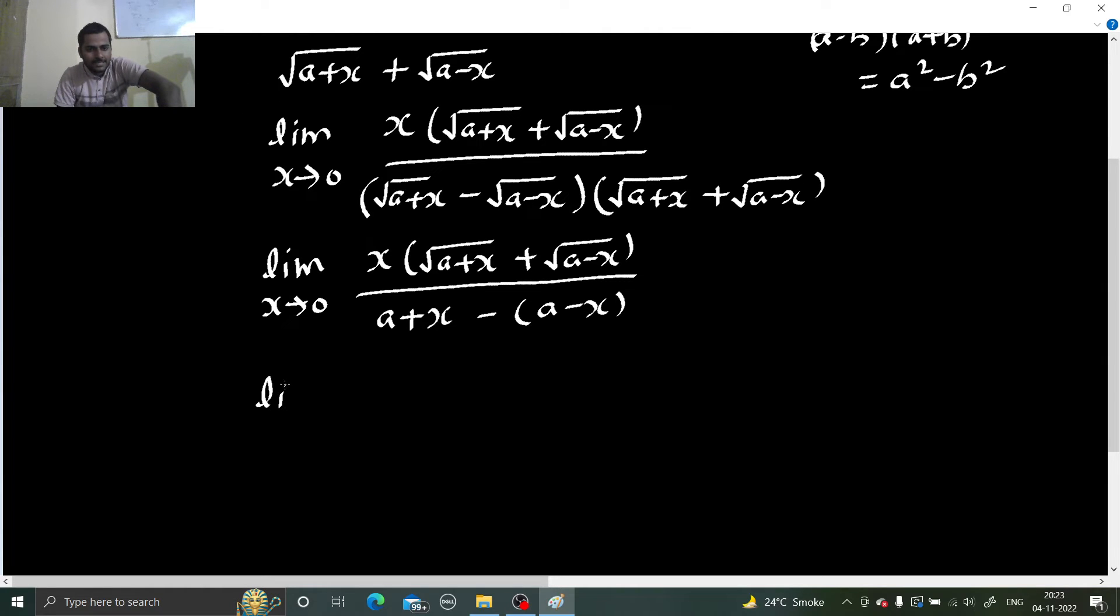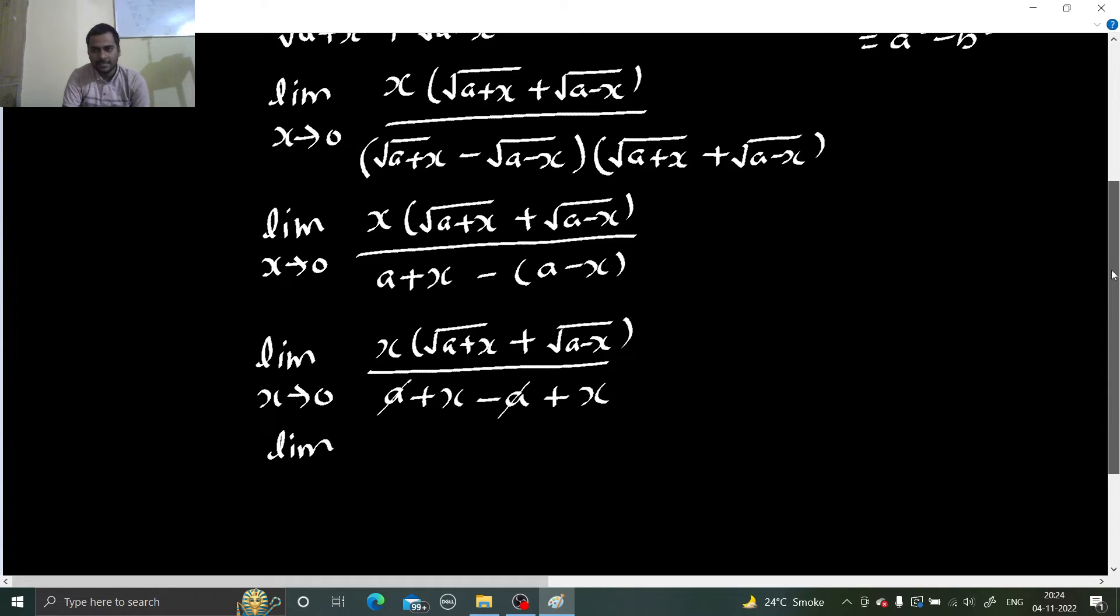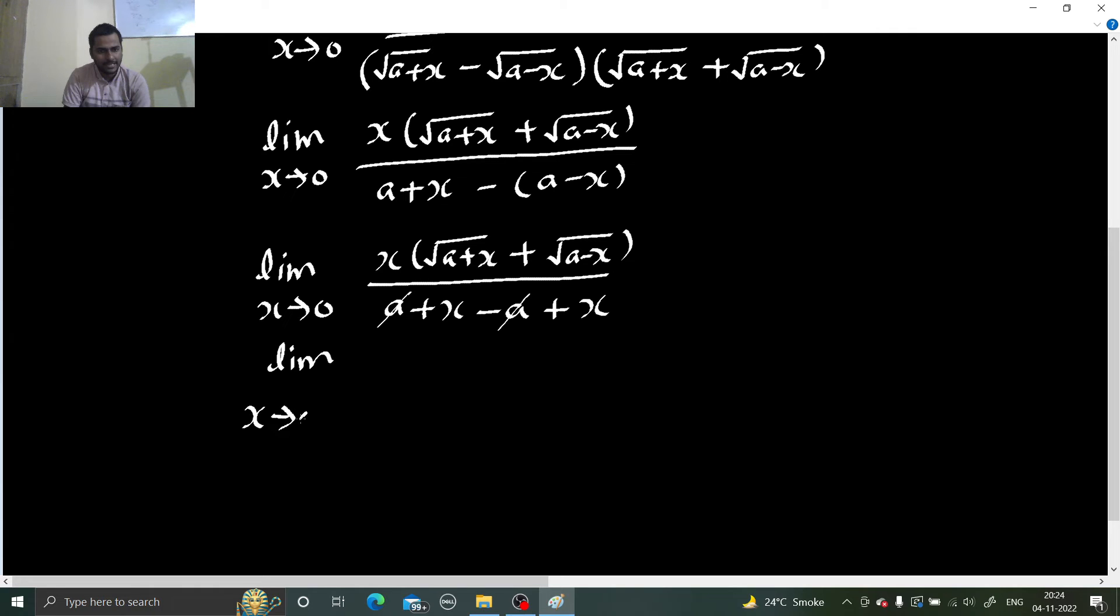So this is limit x tending to 0. Now if I look at the denominator carefully, under root a plus x plus under root a minus x, this is my numerator and denominator is a plus x minus a plus x. So a is getting cancelled. I am getting x two times in denominator. So this is nothing but limit x tending to 0, x under root a plus x plus under root a minus x divided by 2x.